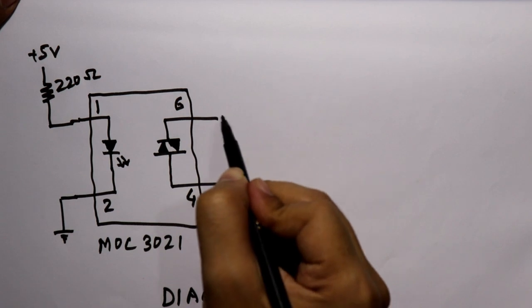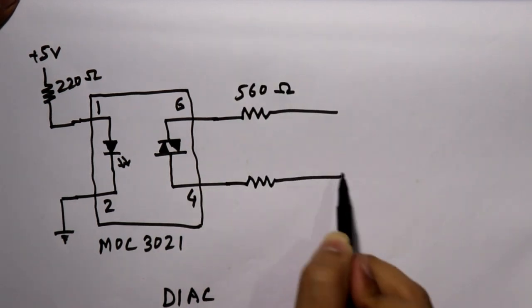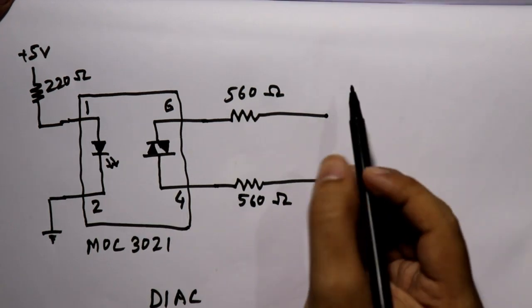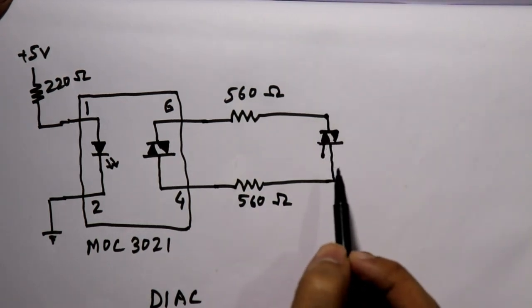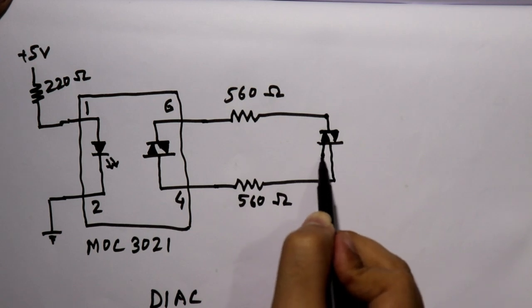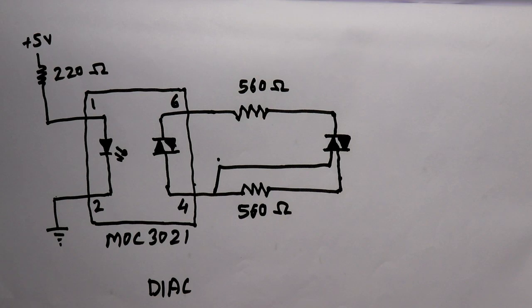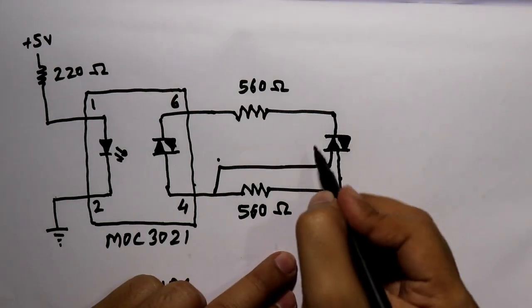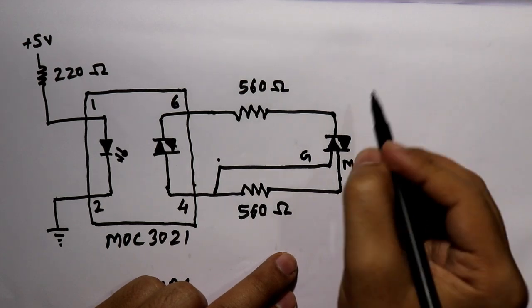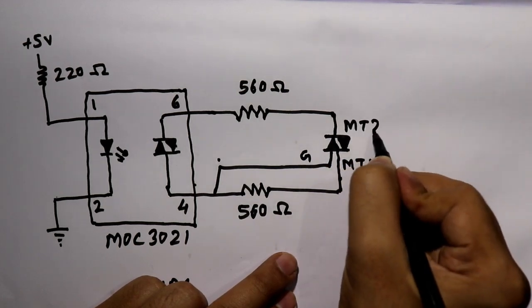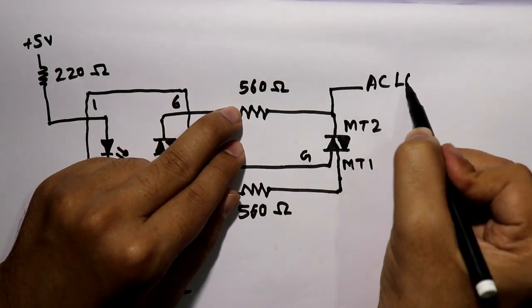At the output side we will connect 560 ohm resistor here with pin number four. Now see here we will connect one triac and gate pin of the triac is connected to pin number four. Triac is a 3 pin device, this pin is gate pin, this one MT1, this pin is MT2 and we'll connect AC load here.